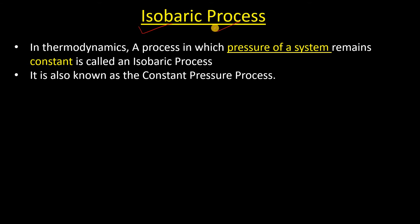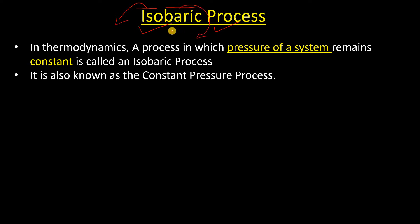What is the isobaric process? First, we understand the meaning of isobaric. There are two words: the first one is 'iso' and the second one is 'baric'. Iso means equal and baric means pressure. So we are going to talk about an equal pressure process.